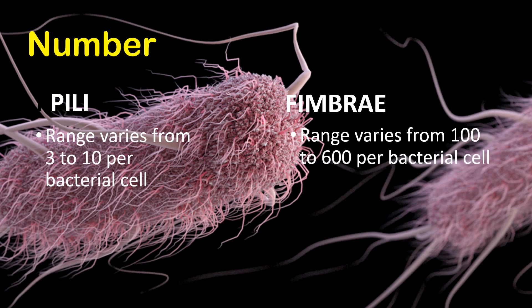Next is number. Pili are lesser in number compared to fimbriae. Pili number ranges from 3 to 10 per bacterial cell. On the other hand, fimbriae range from 100 to 600 per bacterial cell.